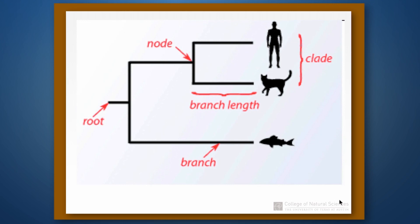First let's make sure we understand how to read and interpret phylogenetic trees. Trees have different parts. Most trees are rooted trees, so the base of the tree is what we call the root — it's where things begin. Whenever we have a speciation event, we have what we call a node. A branch represents an ancestral species, and then it splits into two new species represented by further branches. In computer science these are called edges, but they mean the same thing. At the tips of the tree we have what are called leaves, taxa, or species — these are the different organisms whose relationships we're trying to reconstruct.